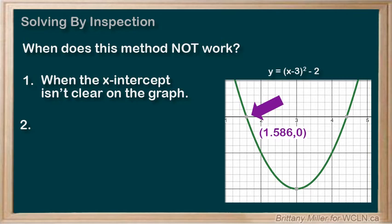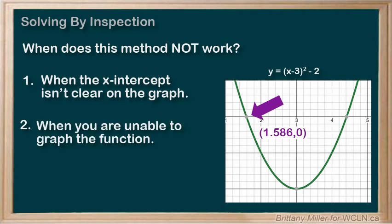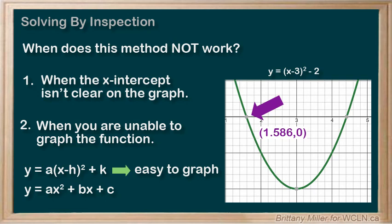The second case is when you are unable to graph the function. Up until now, we've only learned to graph quadratics that are in vertex form, so if you're given something like 3x² - 6x + 7, graphing probably wouldn't be your first choice to solve it.